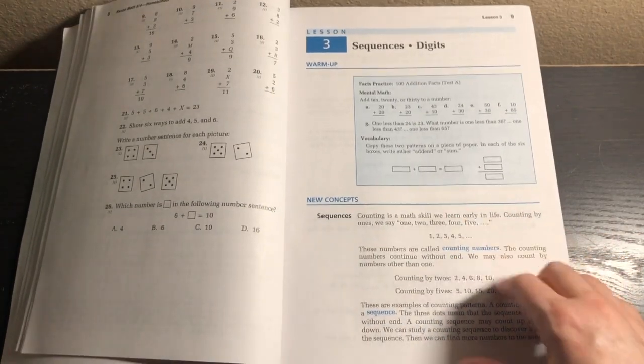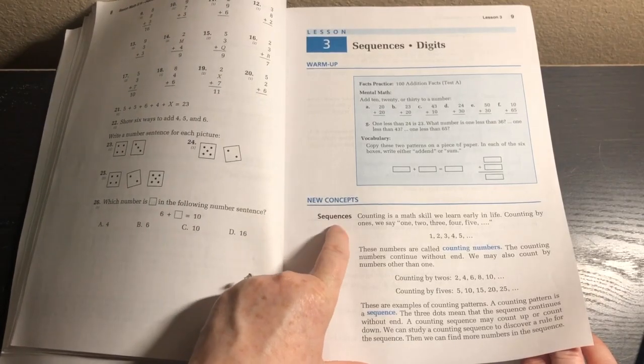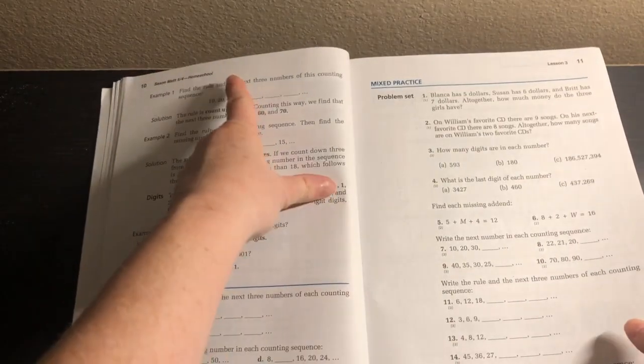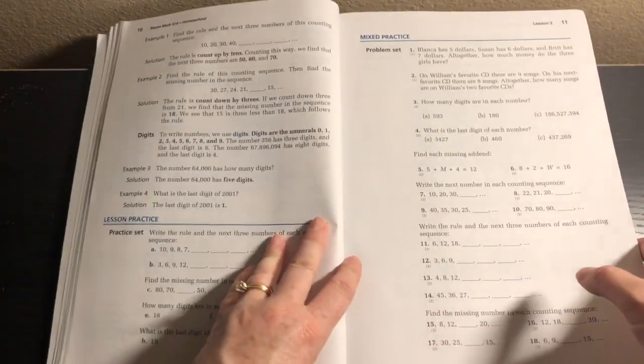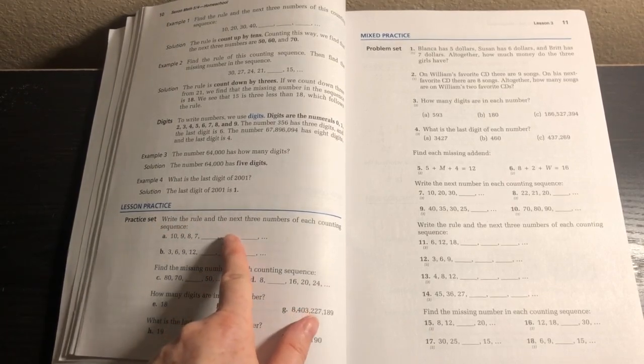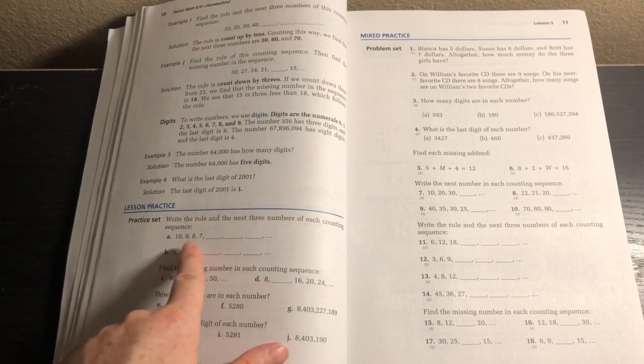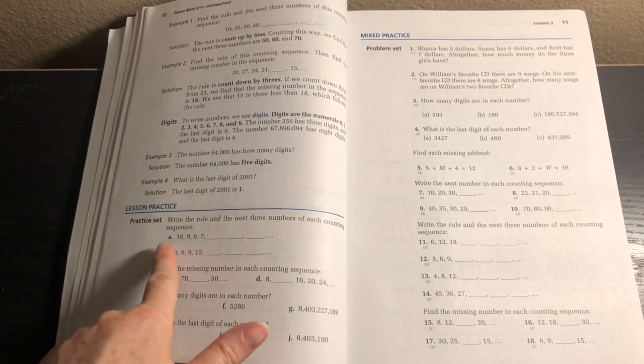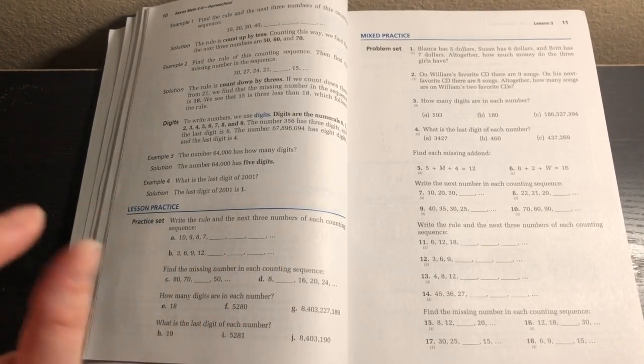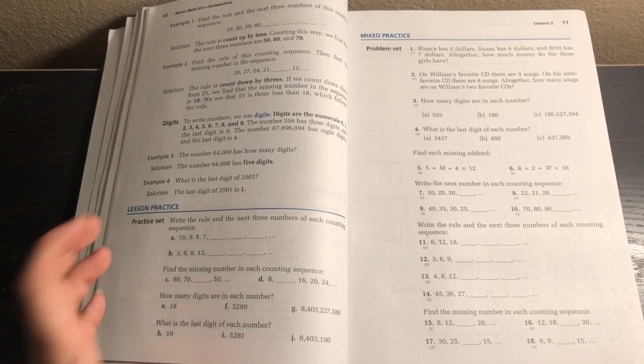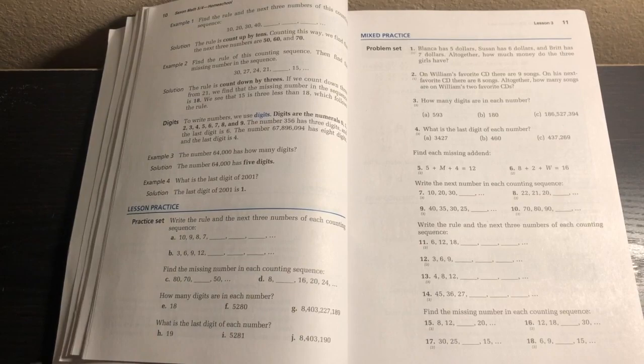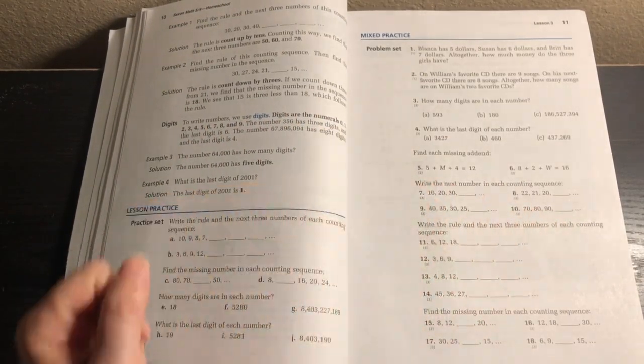Then we have the new concepts here, and in bold it's talking about sequences. Then we have some examples. Then we get to the lesson practice, and this is what I would do with my students. They would write on their individual whiteboards or you could do it on paper. And so we'd go through each one just like that, and that would tell me did they get this lesson.